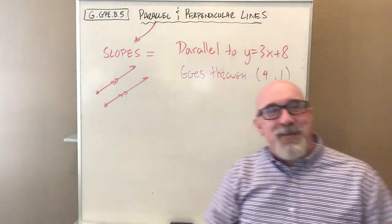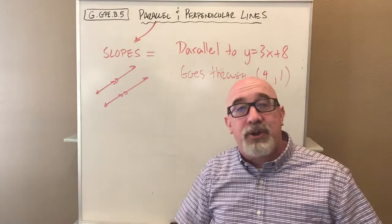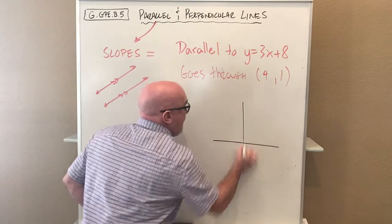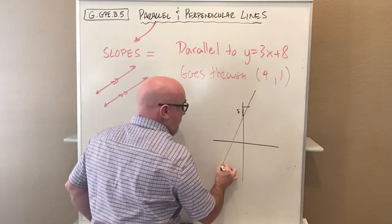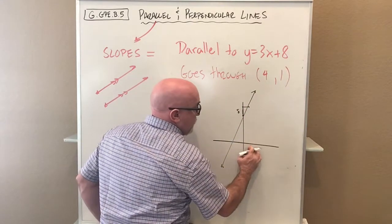How do we come up with an equation that would be parallel to one line and go through another point? Visually, what does that mean? I have a graph here. Here's the 8 with slope of 3 like this. I have this line, and I want to create one that goes through (4,1).